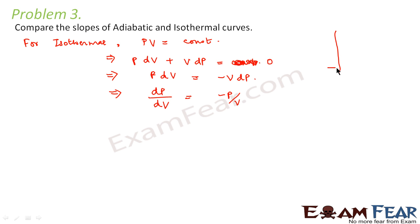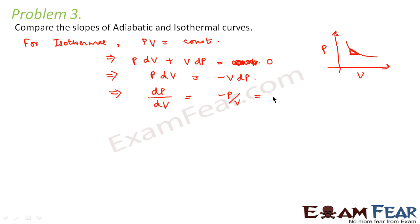What is dP/dV? For the isothermal process, if we plot pressure versus volume, the curve looks like a hyperbola. The slope of that curve is dP/dV. So the slope of the isothermal curve is equal to −P/V.